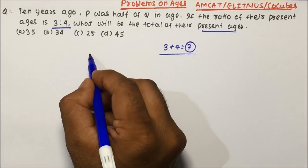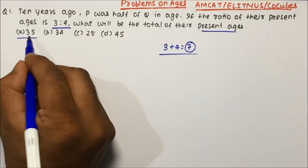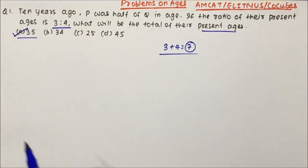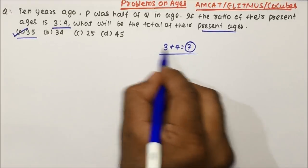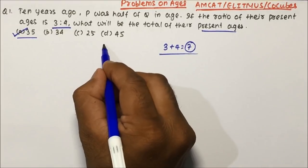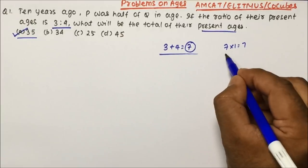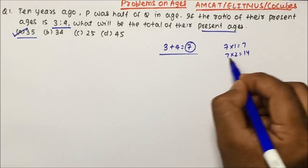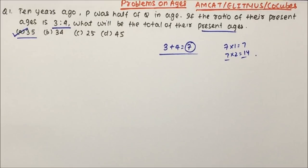Check which option is a multiple of 7. Option A is a multiple of 7, so option A will be the correct answer. Options B, C, D are not multiples of 7. Multiples of 7 means 7 into 1 gives 7, 7 into 2 gives 14, and so on. This question we could have done just by seeing the question without using pen and paper.